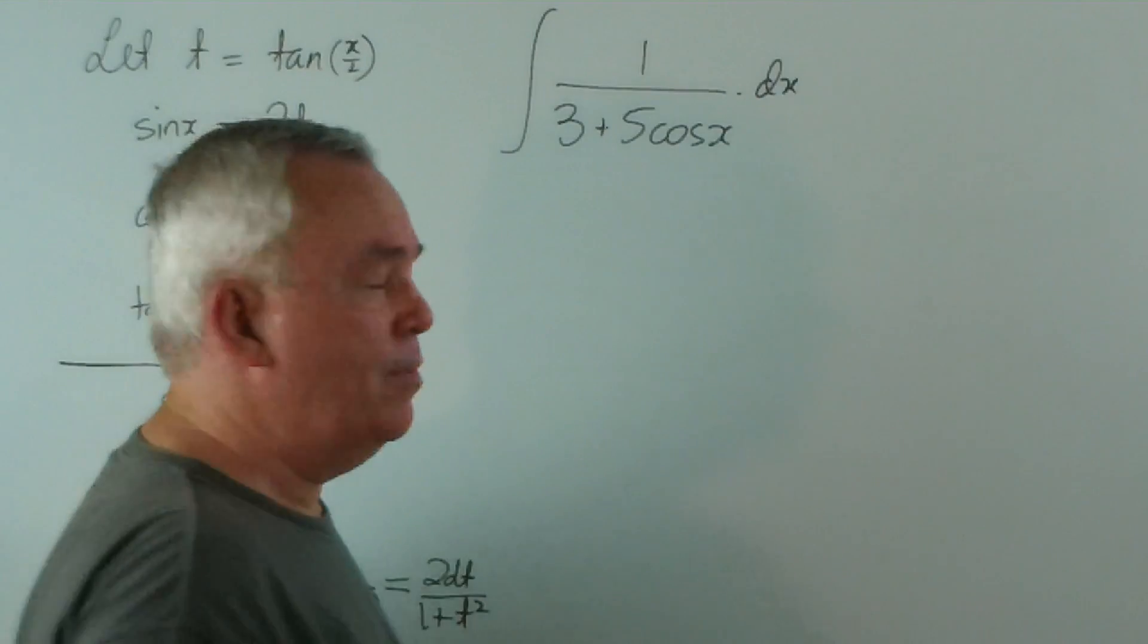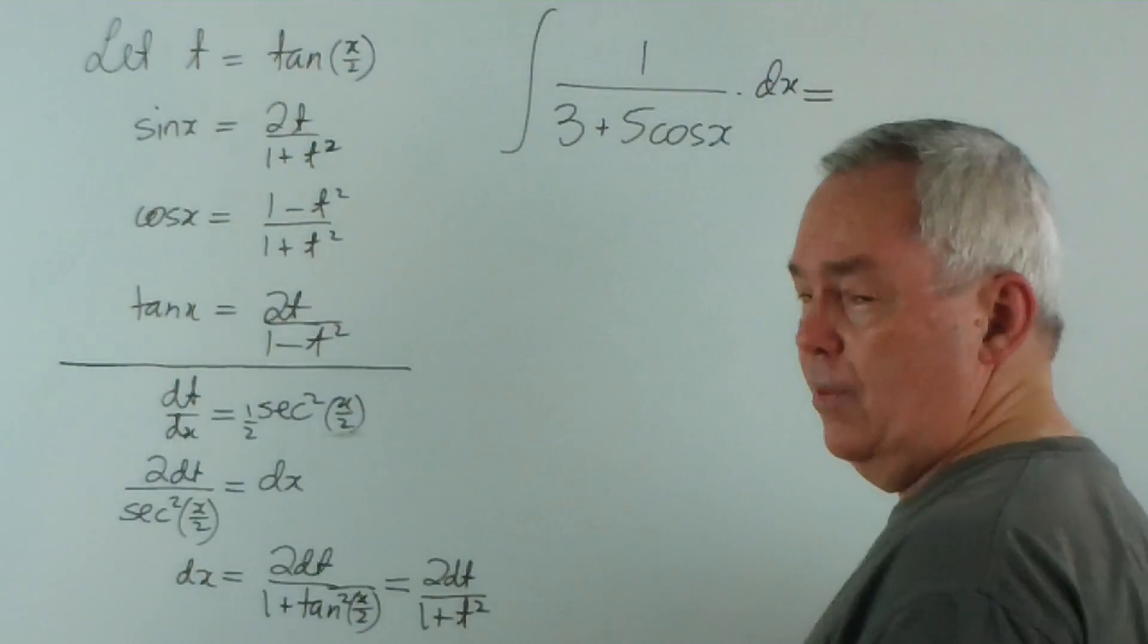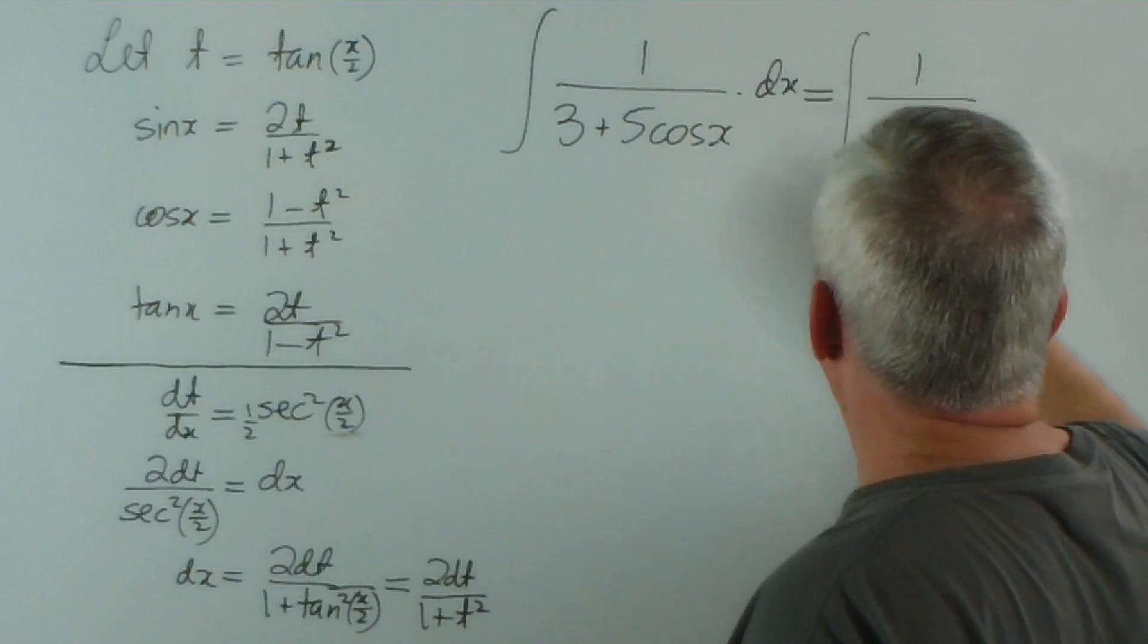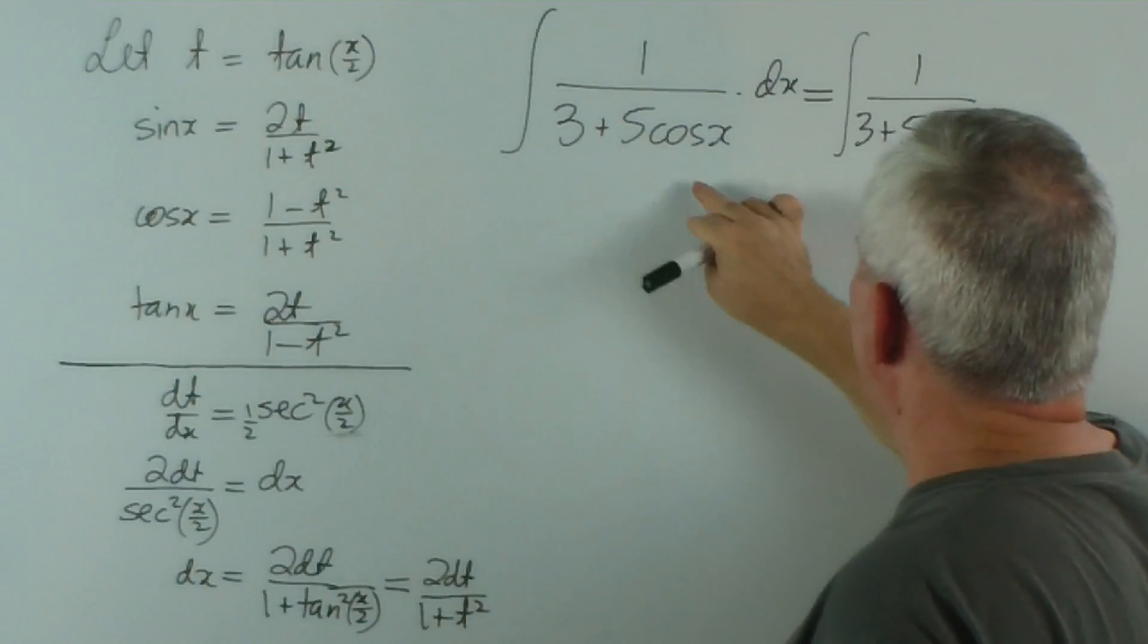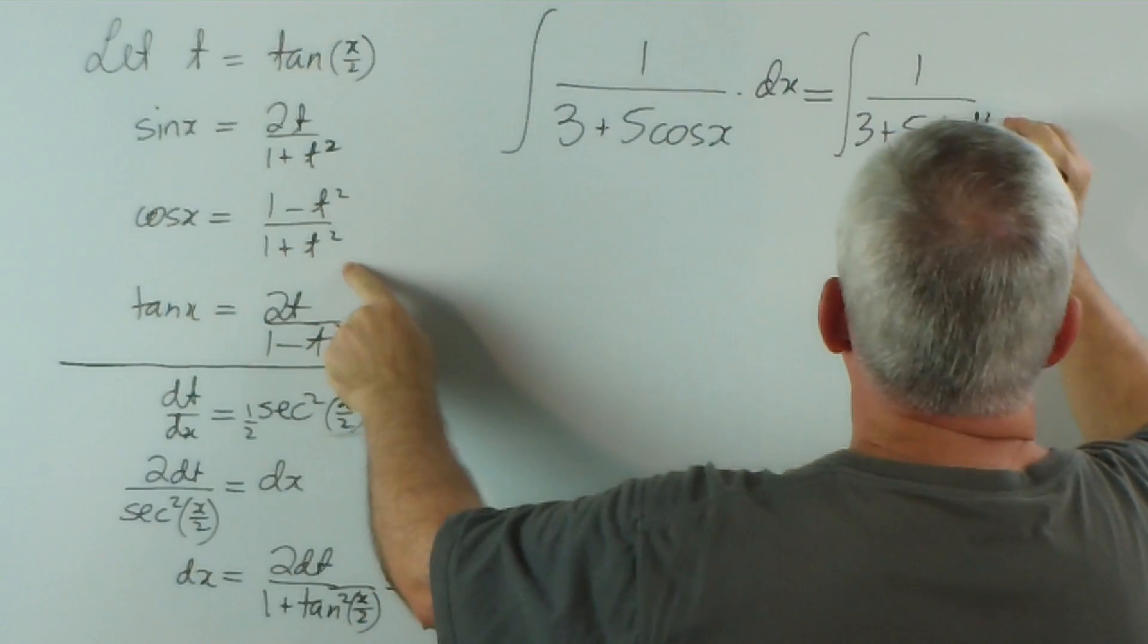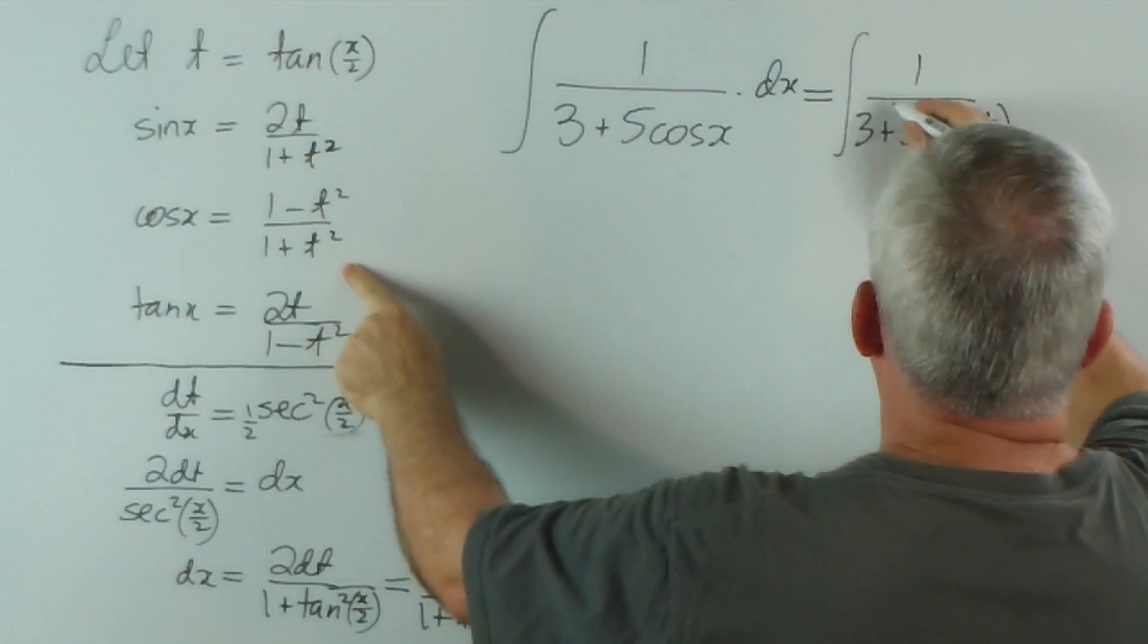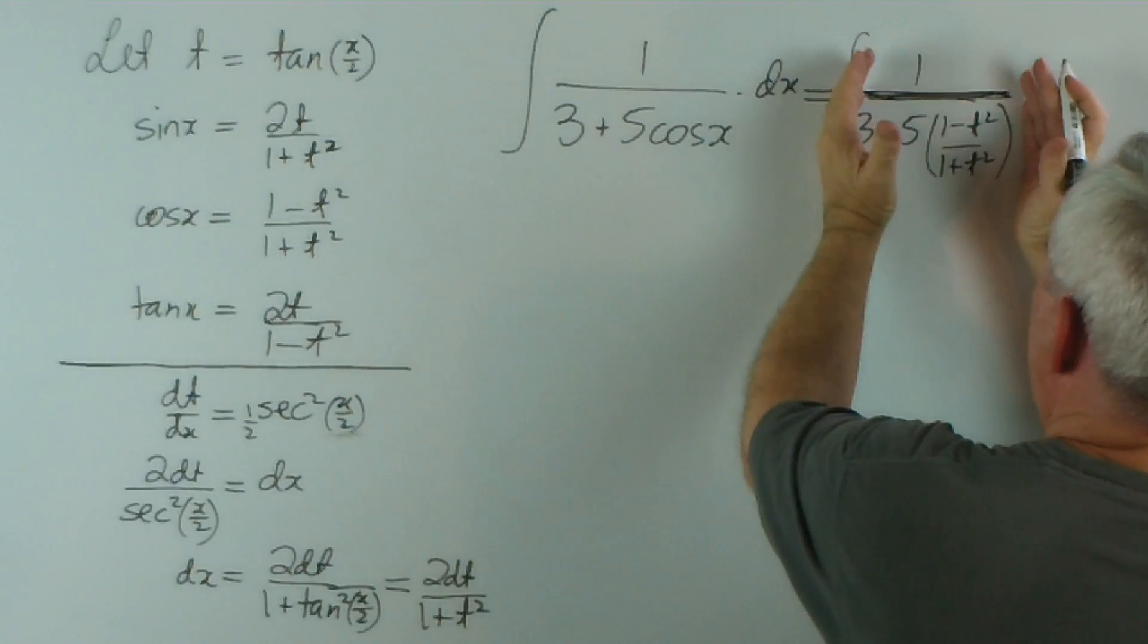Let's see what a difference it makes. This rather very difficult integration is simplified in this way. 3 plus 5... and instead of the cosine of x, I'm going to write this: (1 - t²)/(1 + t²). And this bar, or this vinculum, acts as a grouping symbol for that denominator.